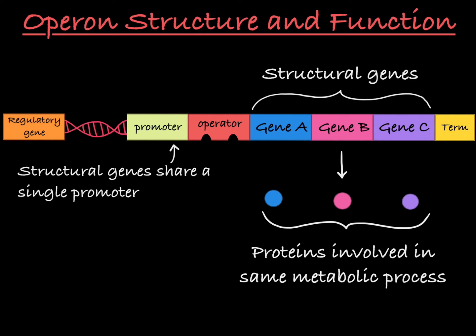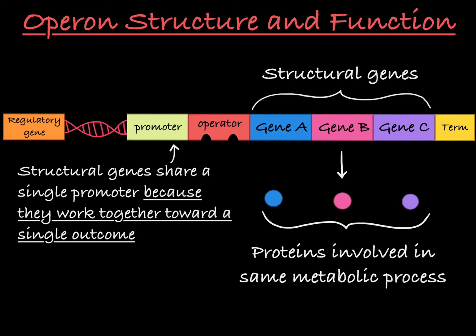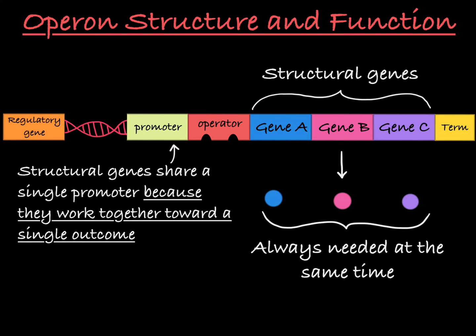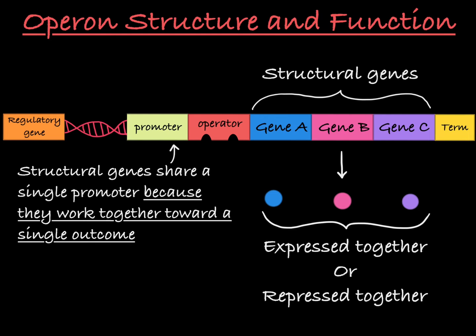You can think of them as members of an assembly line, each with an important job in creating a single end product. There's not an instance where you would need one gene expressed and the others not expressed, because they are all needed in the same pathway. It's simply more efficient for them to all share a single promoter and operator. The genes are either all expressed or all repressed.